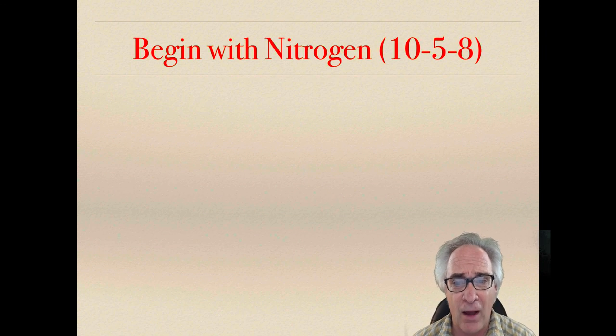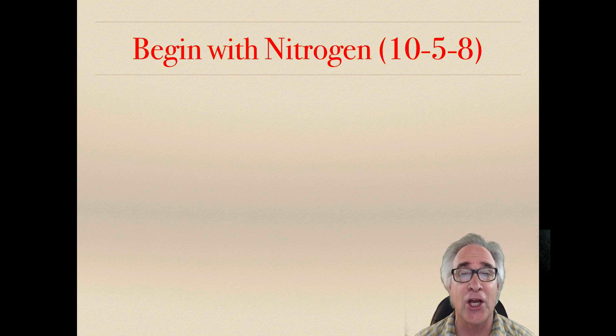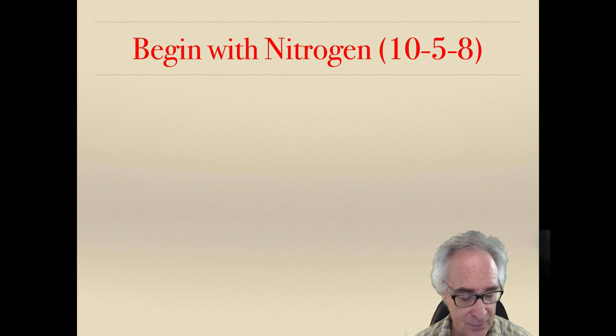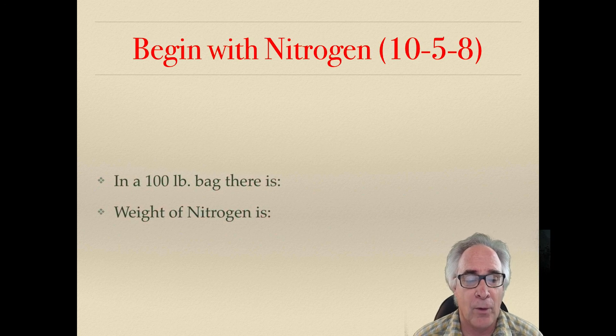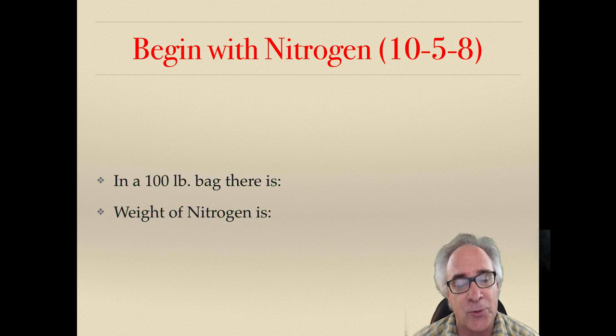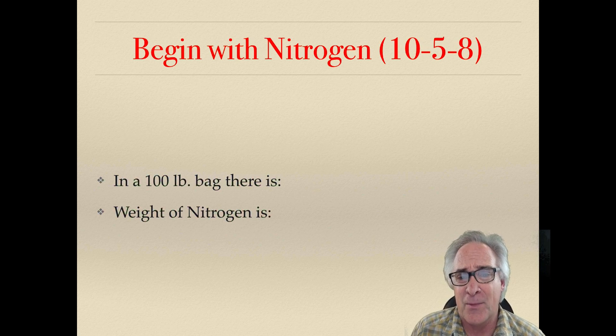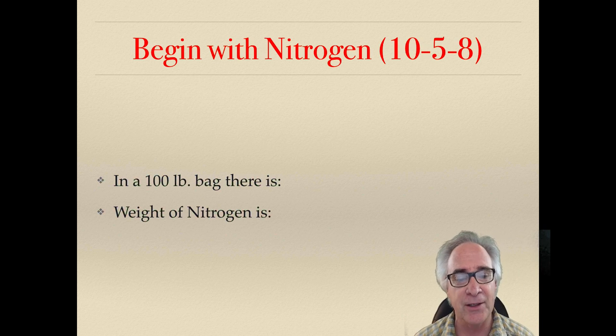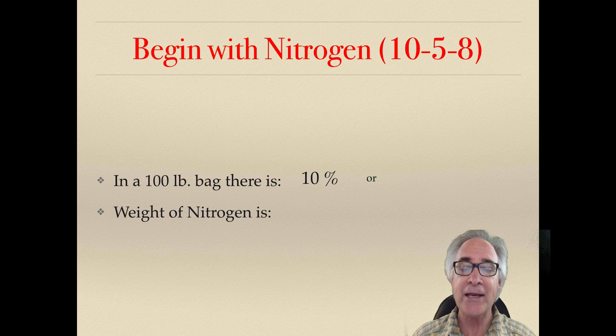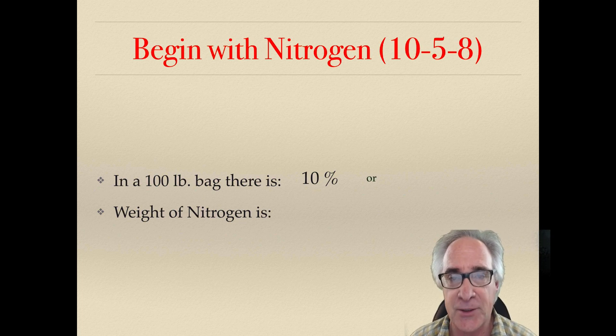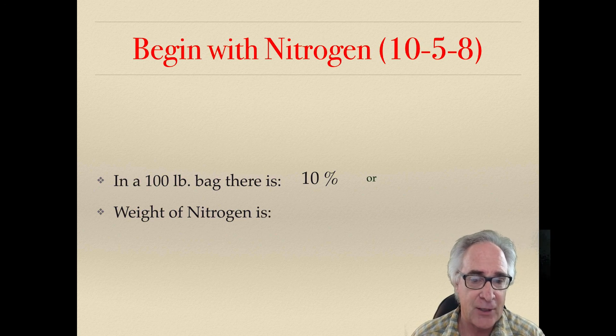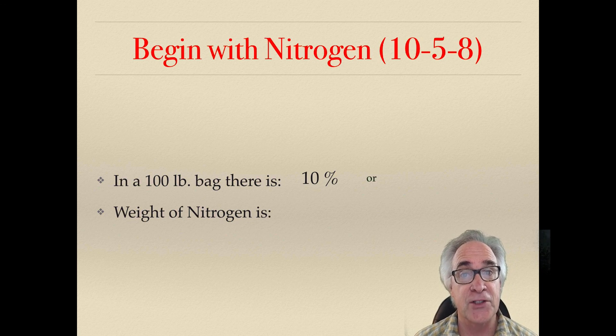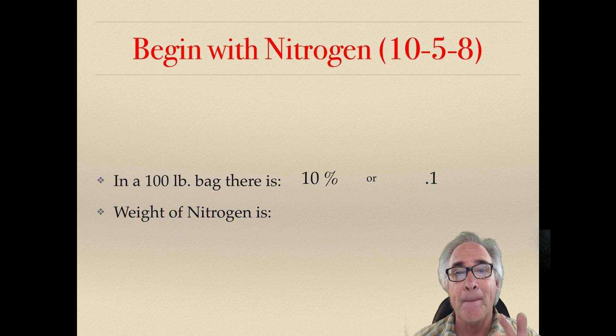We're going to start with nitrogen. We're going to look at just the nitrogen. That means we're just going to be looking at this, 10%. So when we're looking at that, we're going to be taking a look at what that means in terms of this 100-pound bag. Because a lot of times they come in 80-pound bags or 50-pound bags or what have you. So the weight of material, it's still 10% nitrogen. That's all it is. So it's 10%. Another way you can look at it is in a decimal: point 1.